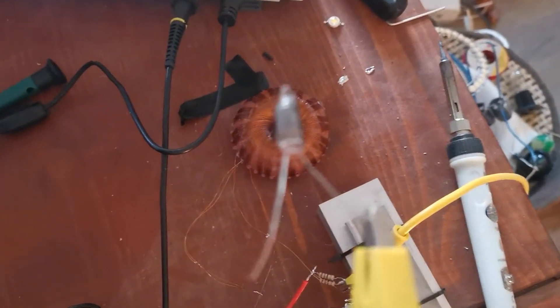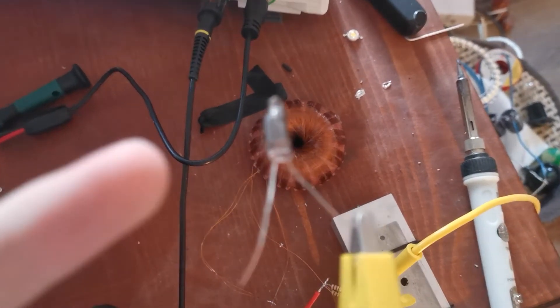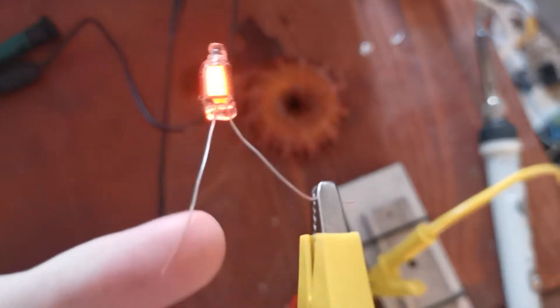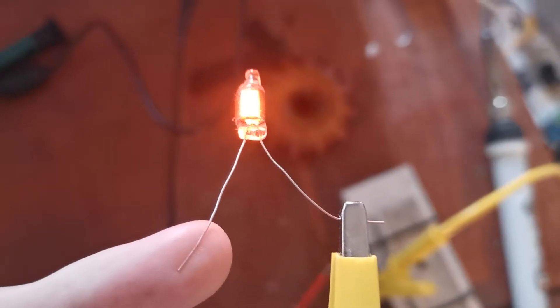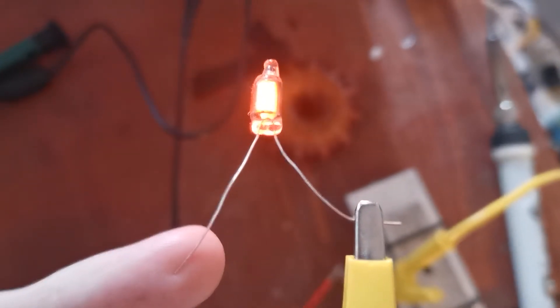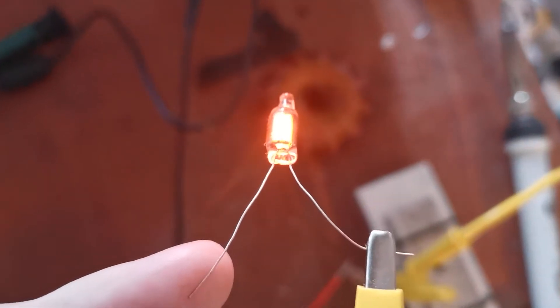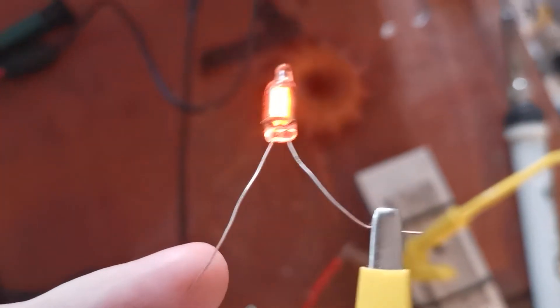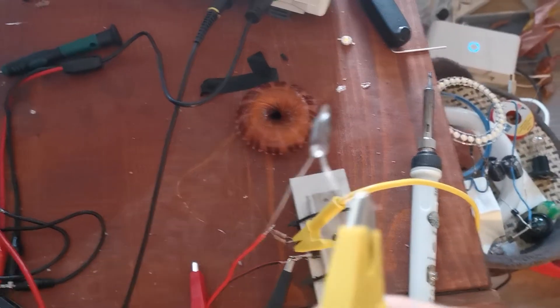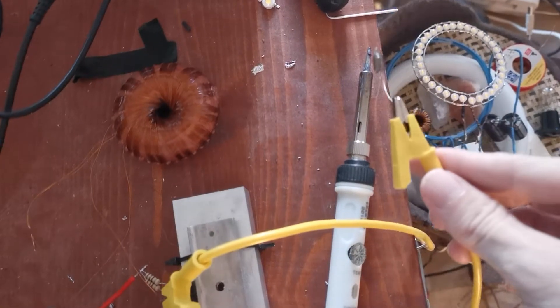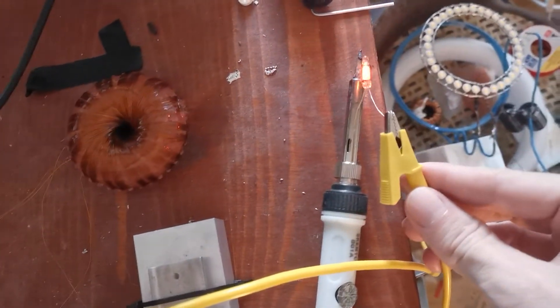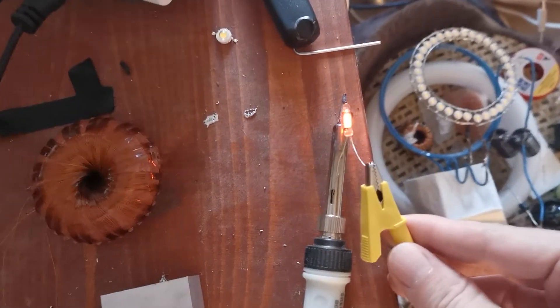To demonstrate this, I have here again this neon bulb. If I touch it with my finger from the left hand, it will light up again like you saw in the last video. What I've also noticed is it doesn't really matter which metal surface I touch. Like this soldering iron—it's not powered on, of course—but